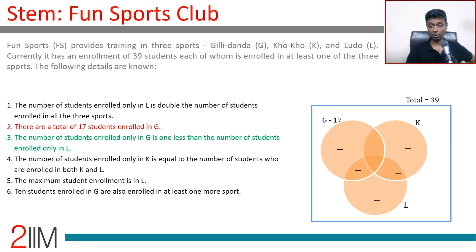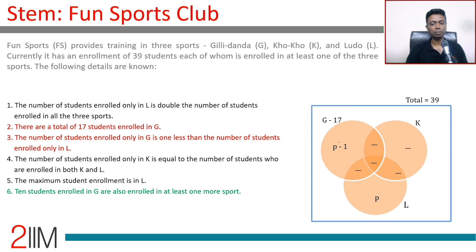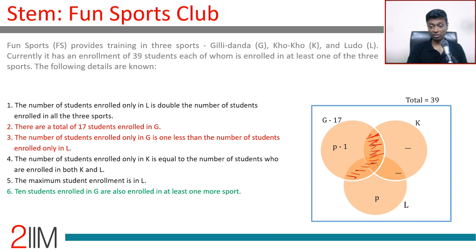The specific constraint is that 17 students are enrolled in G. Also, the number enrolled only in G is one less than only in L — so if only-L is x, only-G is x minus 1. Ten students enrolled in G are also enrolled in at least one more sport, meaning the intersection regions of G add up to 10. That leaves 7 students in only-G, so only-G is 7 and only-L should be 8.